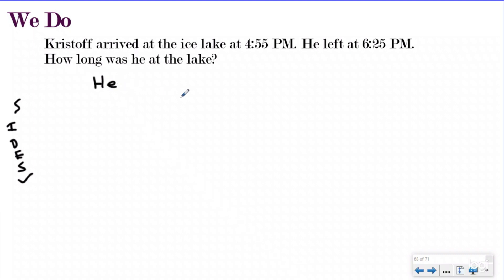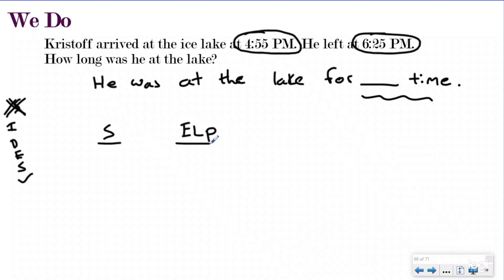And my statement is going to say, he was at the ice lake or at the lake for blank time. When I go back and identify, I'm going to be looking for anything about the ice lake or lake and the time. So he arrived at the ice lake at 4:55 p.m. He left at 6:25 p.m. And you want to know how long he was at the lake. So I'm going to label my start time, my elapsed time, and my end time. And I'm going to write down 4:55 because that was when the event of him being at the lake started. And I'll put p.m. My end time when he left the lake, which finished the event, was 6:25. And I have a question mark.